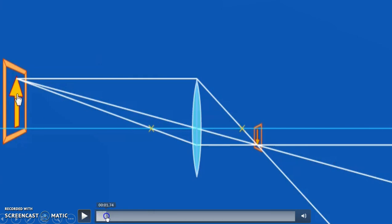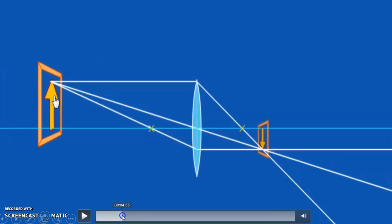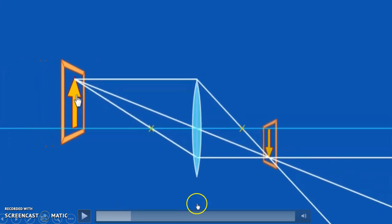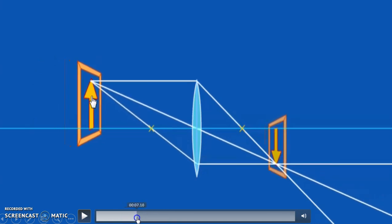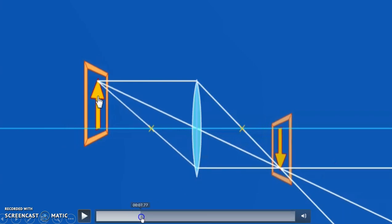So as I move my object closer, see what happens. As I move it closer, my image starts becoming bigger and bigger and further away. So you can see it's still on the opposite side, that means the image and the object are on opposite sides. So if they are on opposite sides, it's also known as a real image. That means I can actually put a screen here and I can actually capture the image.